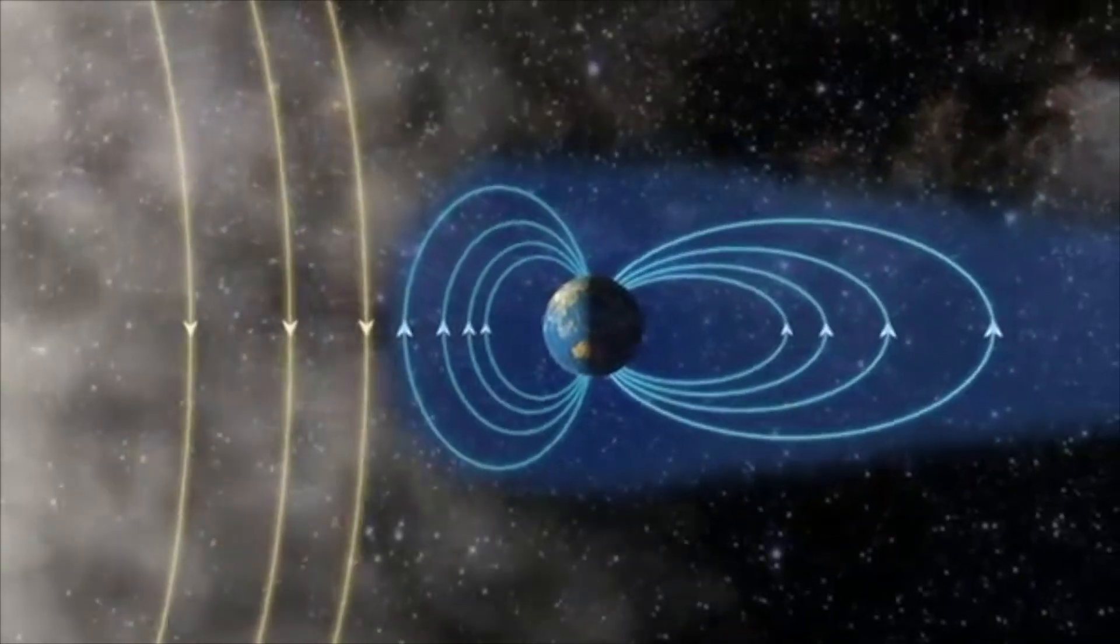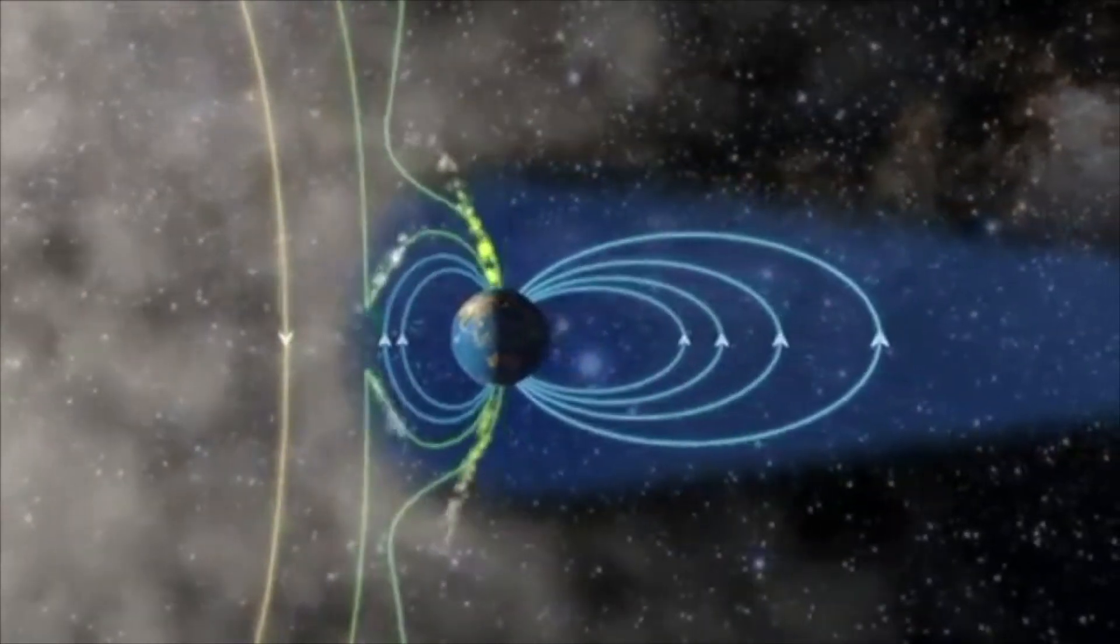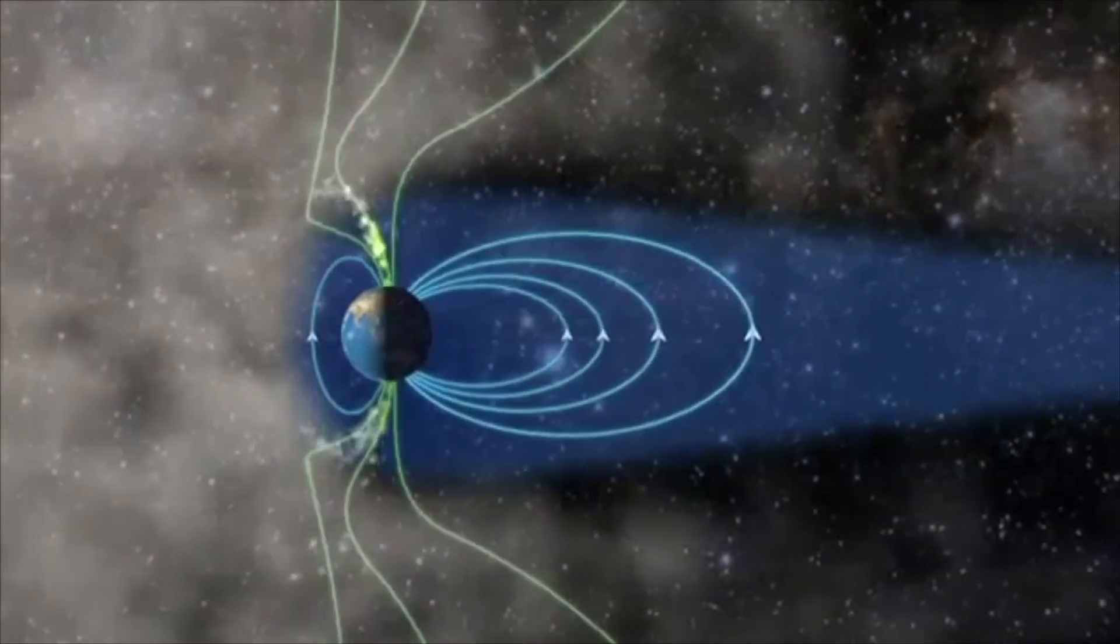The magnetic fields couple together and create a funnel where the gas streams down on the daylight side of the pole.